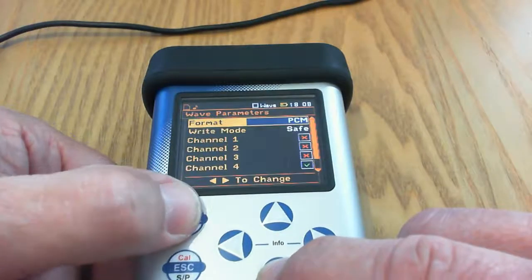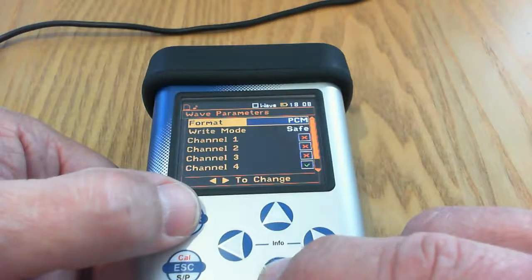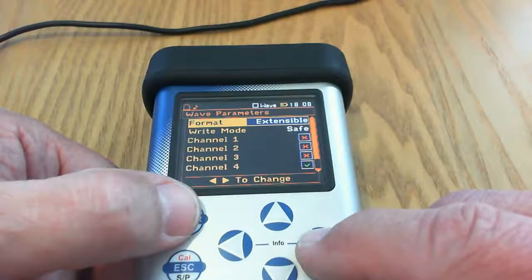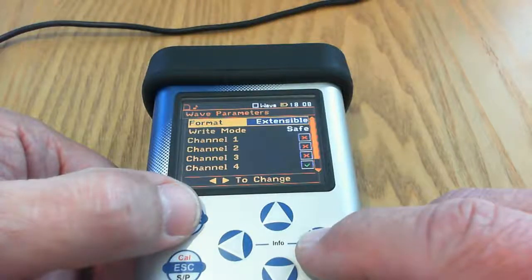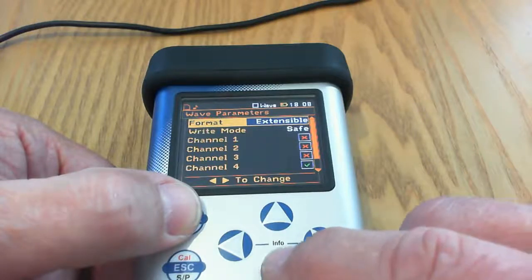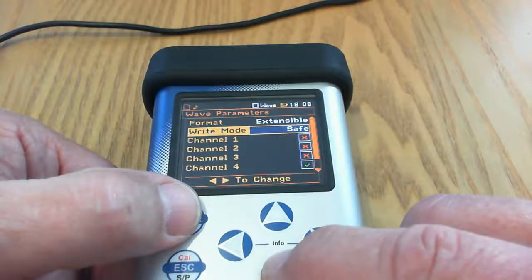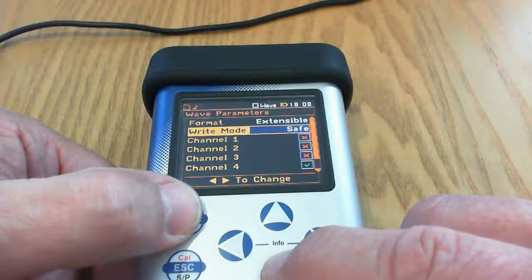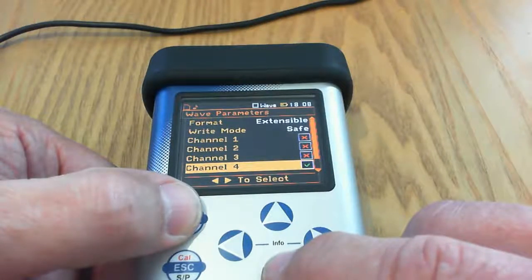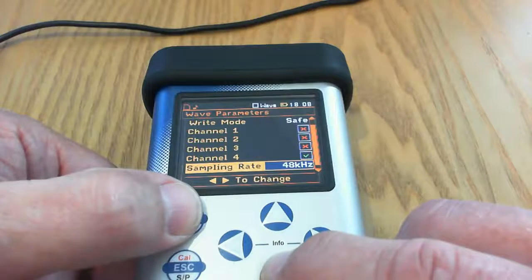The next is the wave parameters. Normally we'd use the PCM mode, but if you want 24-bit data you can use the extensible. This reduces compatibility with some post analysis programs, but there are plenty of tools available such as Audacity that allow you to change the format. Safe mode ensures that all the data is recorded in a slightly more orderly fashion, but in this case since we're only going to be recording channel 4 we shouldn't have too many issues with the write frequency.